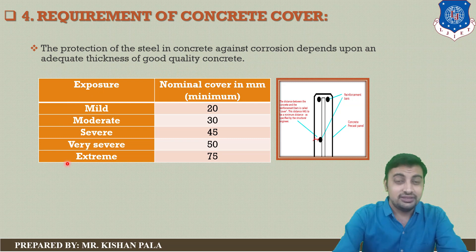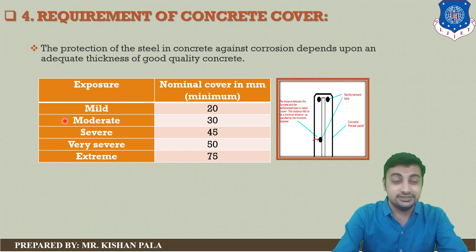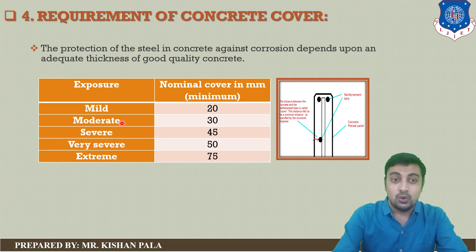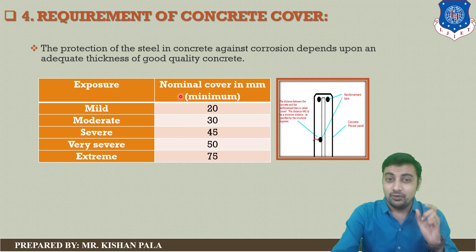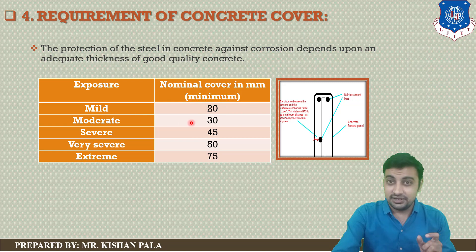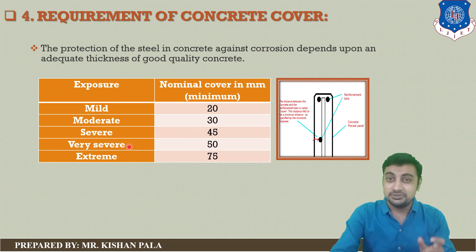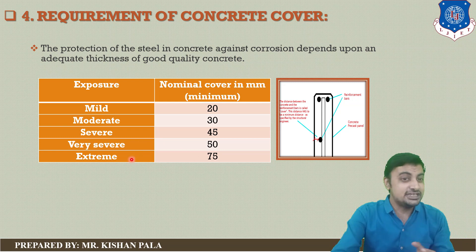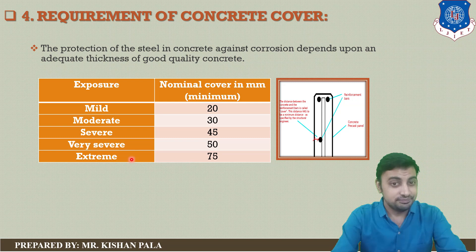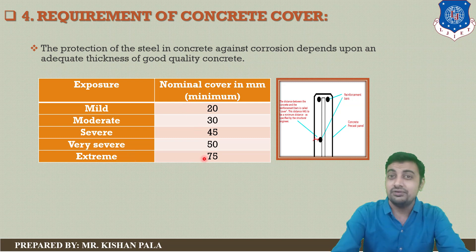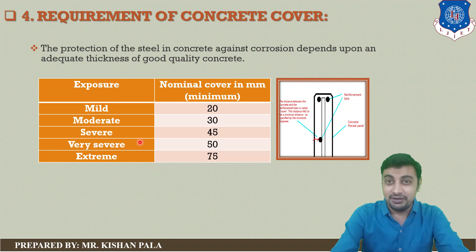We have classified the different environmental exposure conditions for concrete as: mild, moderate, severe, very severe, and extreme. For mild condition, provide a minimum nominal cover of at least 20 mm. For moderate, 30 mm. For severe, 45 mm. For very severe, 50 mm. And for extreme exposure condition, 75 mm. These are the minimum cover requirements for the durability of the concrete.